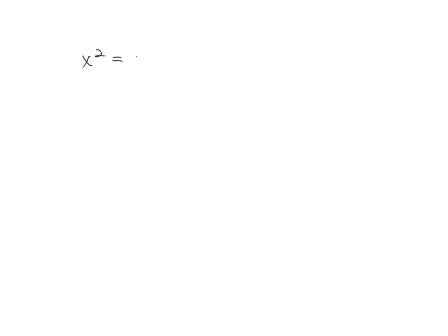Here's something to understand: I have an exponent of two, which means I'm going to have two answers. If you solve a normal equation like 2x plus five equals ten, there's no exponent — well, the exponent is one — so there's one solution. The exponent tells you how many solutions there are going to be. So when you have x squared by itself, all you do is take the square root of both sides.